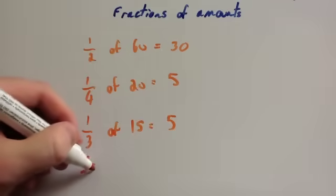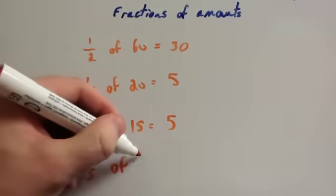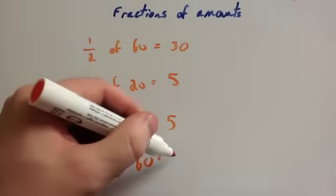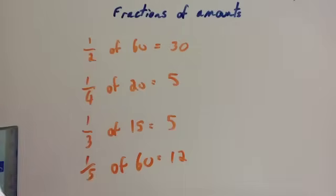So if I wanted to work out a fifth of 60, I do 60 divided by 5. 60 divided by 5 is 12. So if you want to work out a half divided by 2, a third divided by 3, a quarter divided by 4, a fifth divided by 5, a sixth divided by 6, and so on.